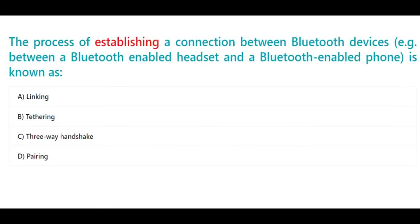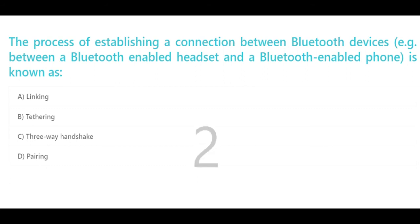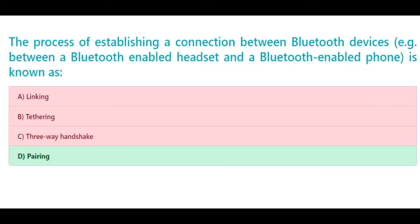The process of establishing a connection between Bluetooth devices — e.g., between a Bluetooth-enabled headset and a Bluetooth-enabled phone — is known as: a. Linking, b. Tethering, c. Three-way handshake, d. Pairing. The correct answer is d. Pairing.